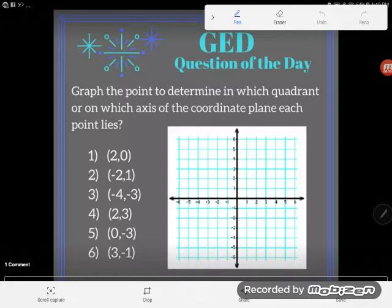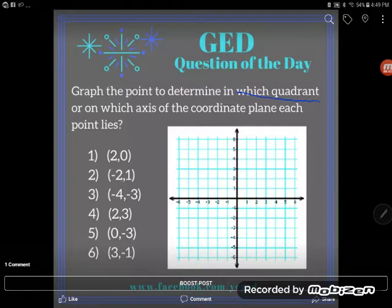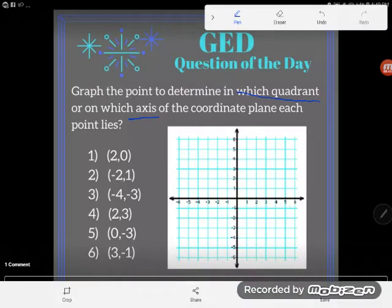First of all, there's some language you need to know. You need to know what the quadrants are and you need to know what the axes of the graph are. One is an axis, but two, more than one, are axes.